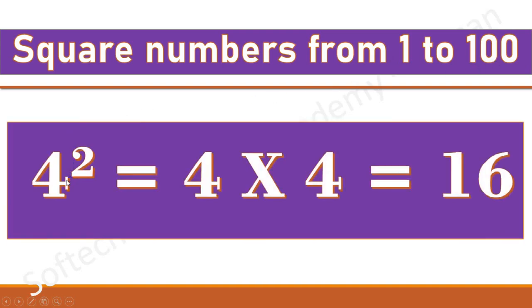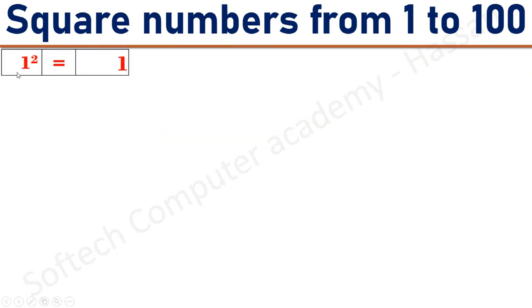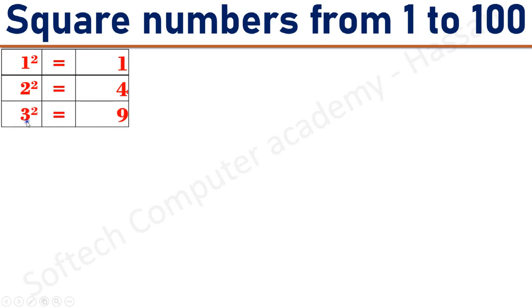For example, 4 square equals 4 into 4 equals 16. 1 square equals 1. 2 square equals 4. 3 square equals 9. 4 square equals 16.